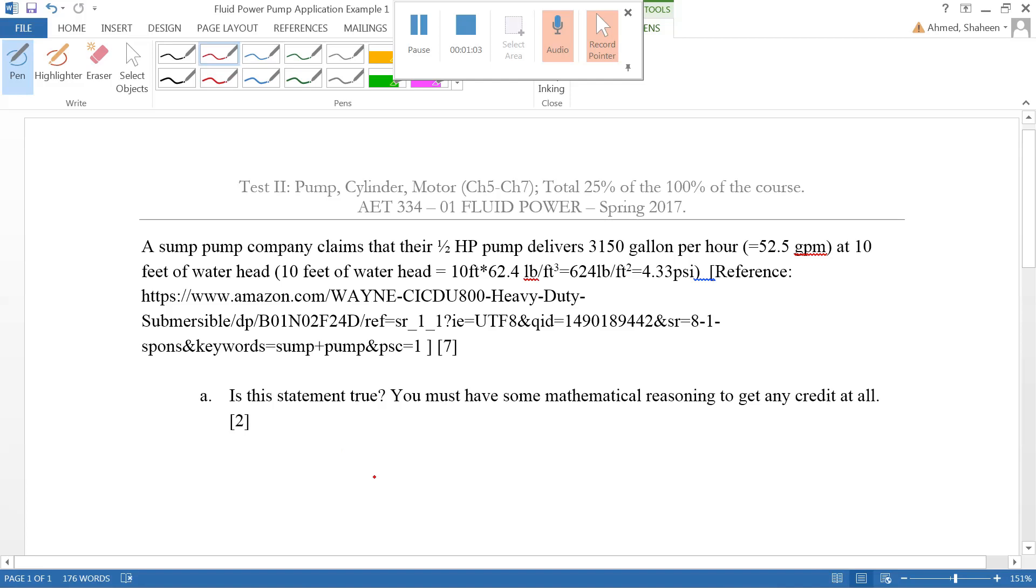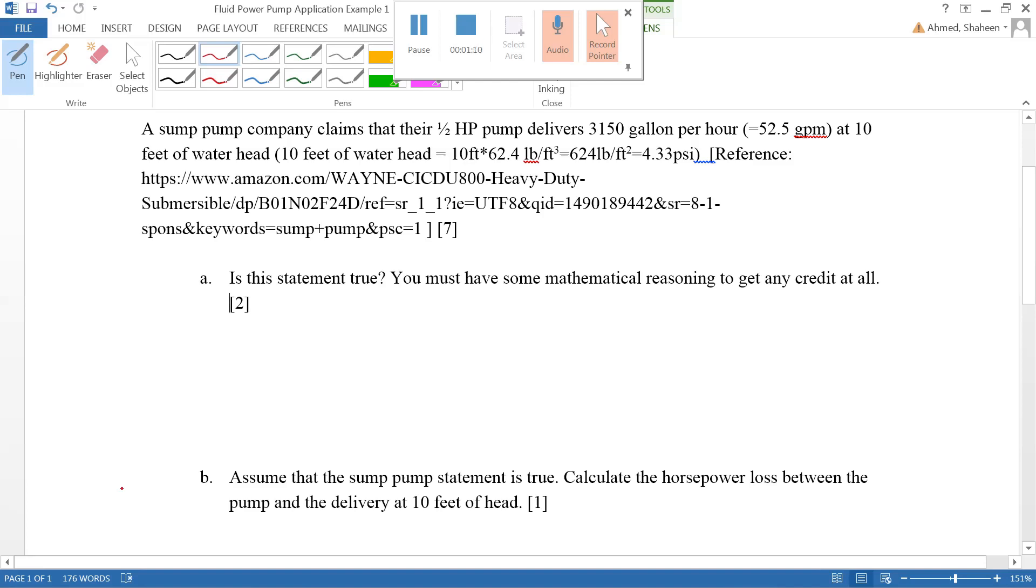The first question asks: is this statement true? Let's calculate the power based on the information they provided. If we want to calculate the power output according to their number, the power output P, if P is in psi and Q is in gallons per minute, then if we divide this by 1714, this number will eventually come in horsepower.